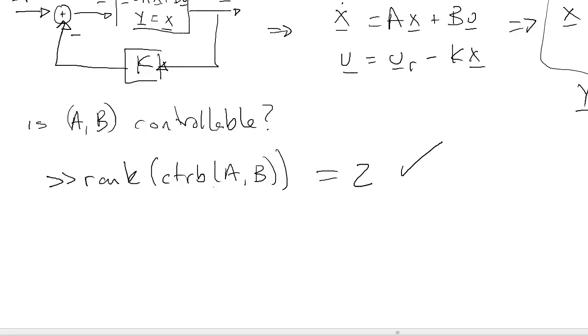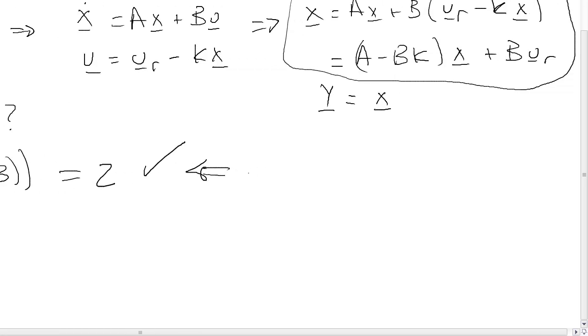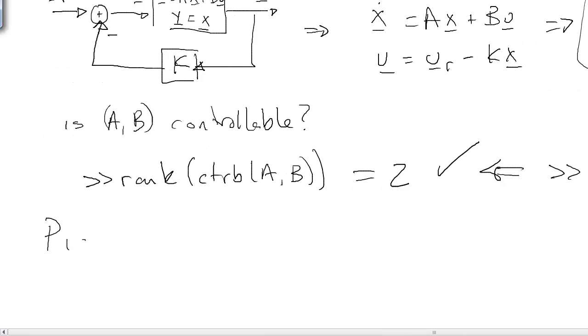Therefore, we can pick arbitrary eigenvalues for the closed-loop system by picking K. This means we'll be able to use the MATLAB place command to solve for the gains that we want. First, let's pick some eigenvalues. We're going to do this based on performance.